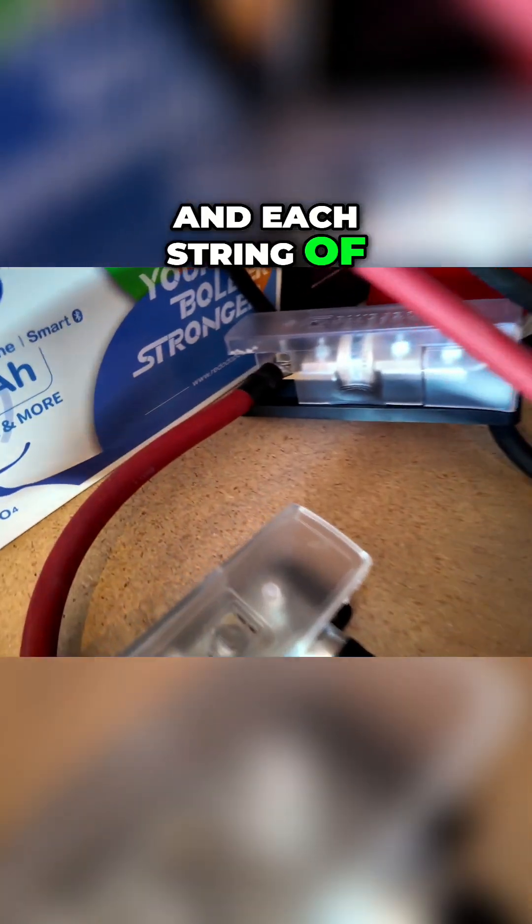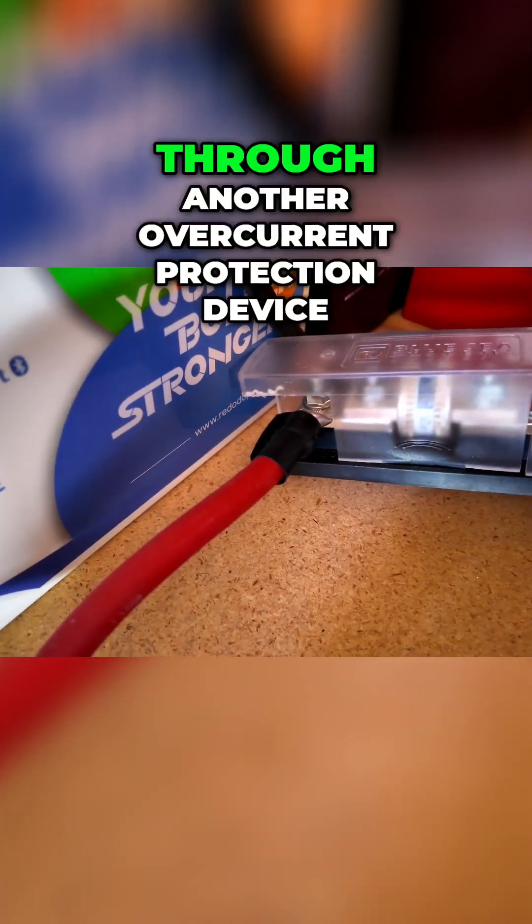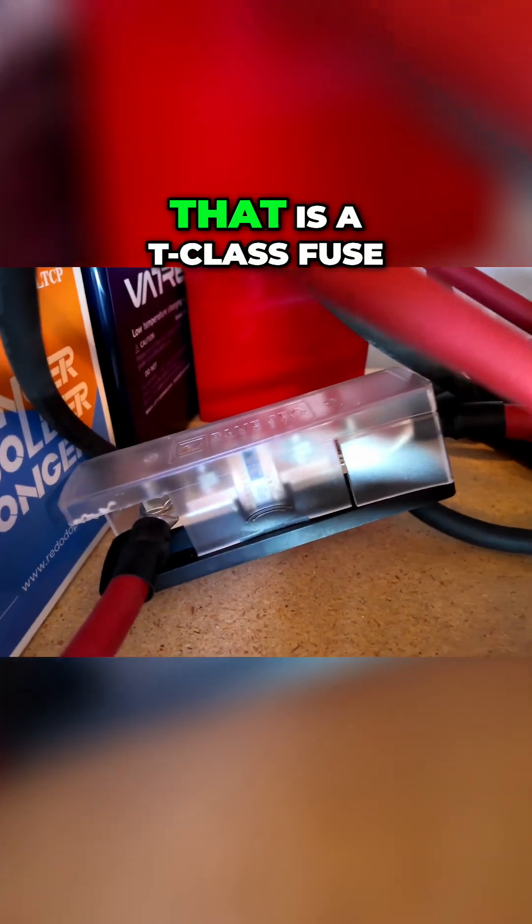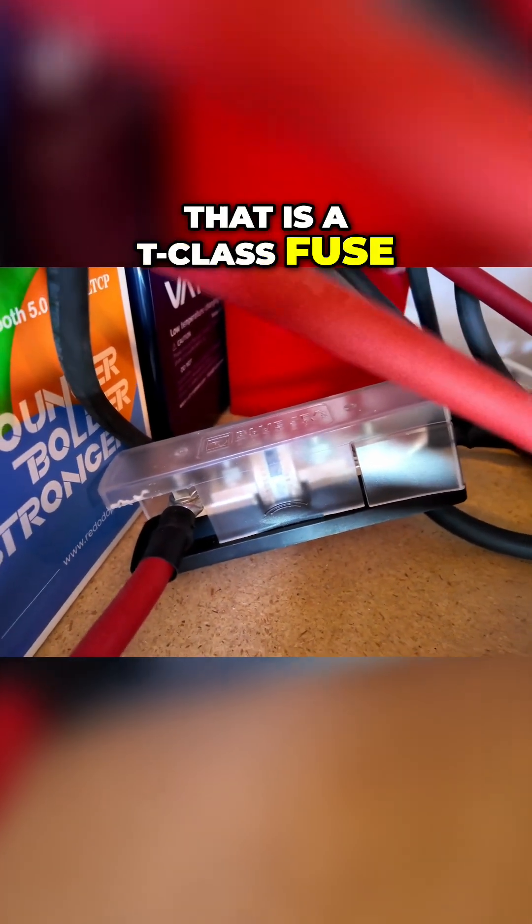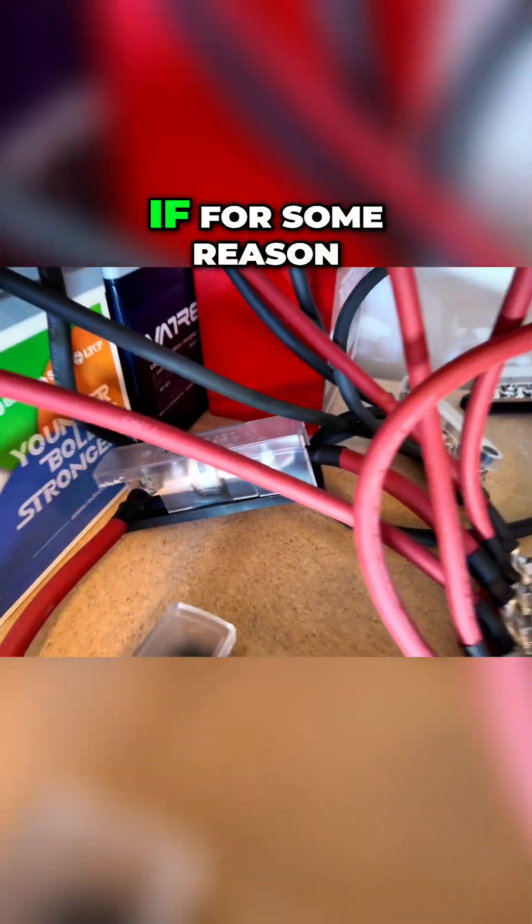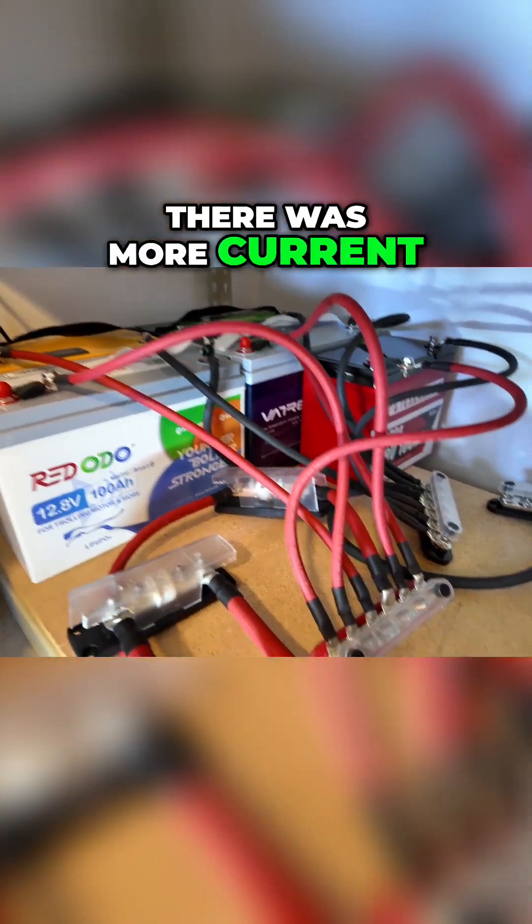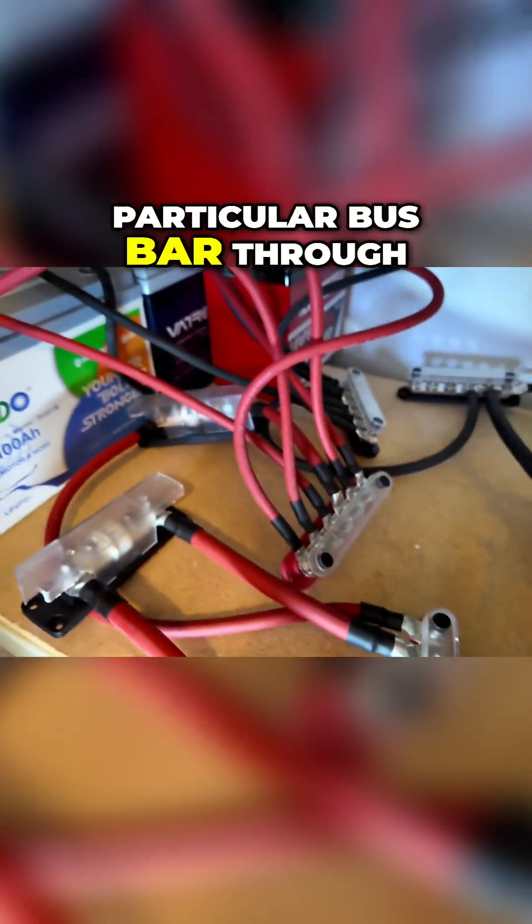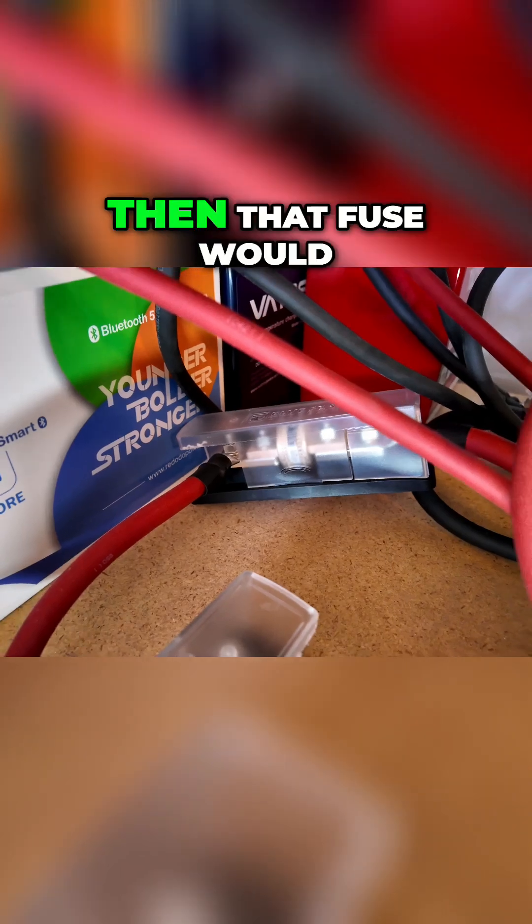Each string of five batteries then goes through another overcurrent protection device. You can see it right there - that is a T-class fuse, and that's only a 250 amp T-class fuse. If for some reason there was more current than 250 amps coming from this particular bus bar through that fuse, then that fuse would blow and isolate this battery pack.